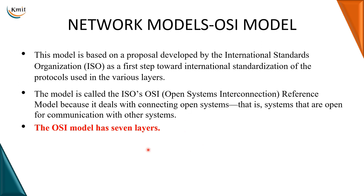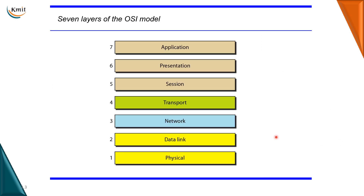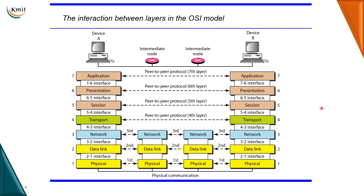The OSI model has seven layers, namely physical layer, data link layer, network layer, transport layer, session layer, presentation layer, and application layer. Before learning each layer in detail, let me show you the interaction between the layers in the OSI model.